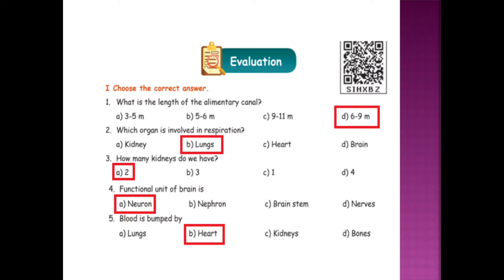Which organ is involved in respiration? Kidney, lungs, heart, brain. The answer is lungs. How many kidneys do we have? Options: 2, 3, 1, 4. The answer is 2.